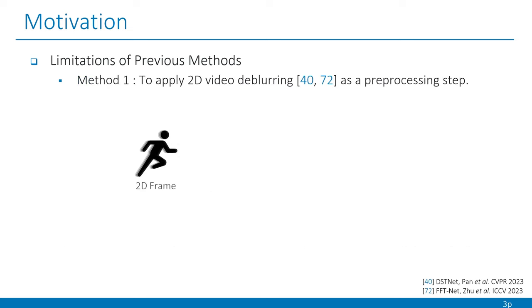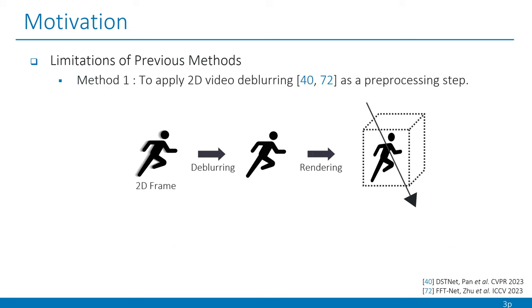One straightforward solution is to apply 2D video de-blurring as a pre-processing step to the given blurry frames before optimizing video NeRFs. However, this naive approach has a significant drawback as independently de-blurring frames in the pixel domain can introduce inconsistent geometry in 3D space.